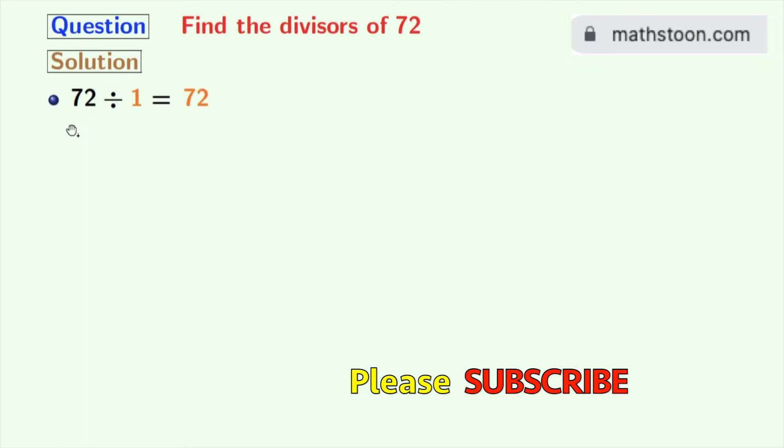Now if we try for 2, see that 72 divided by 2 is 36. So 2 and 36 are the divisors of 72. Now the next number 3 divides 72, and we have 24. So 3 and 24 are the divisors of 72.